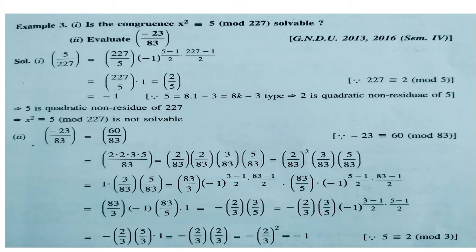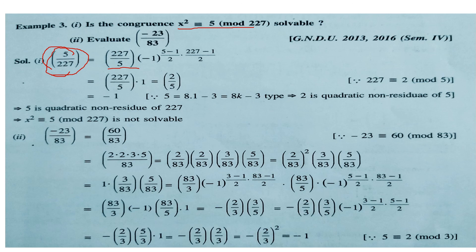Example: show whether x² ≡ 5 (mod 227) is soluble. Compute the Legendre symbol (5/227). Using the reciprocity law, interchange to get (227/5) times a sign factor. Simplification gives (2/5). Since 5 is of the form 8k−3, 2 is a quadratic non-residue mod 5, so (2/5) = −1. Therefore (5/227) = −1, and the given equation is not soluble.